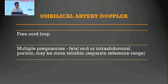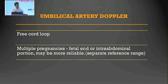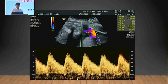Next is the umbilical artery, which can be measured at the placental end, free loop, or fetal end. At the fetal end, impedance is higher and any reversal or absent diastolic flow will appear there first. Most reference charts are based on the free loop, which is also easiest to obtain. In multiple pregnancies, you may measure near the fetal end or in the intra-abdominal portion, but use the corresponding reference charts for each site.